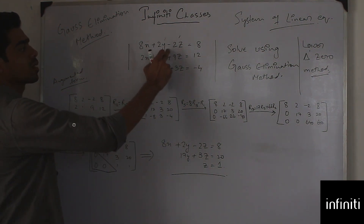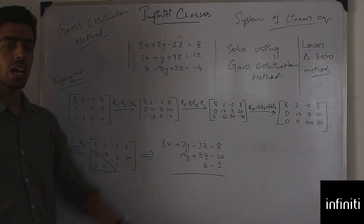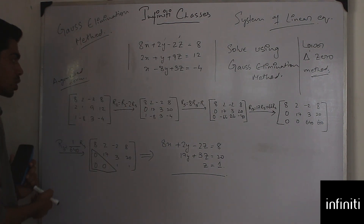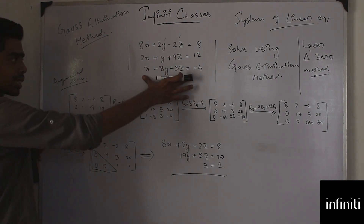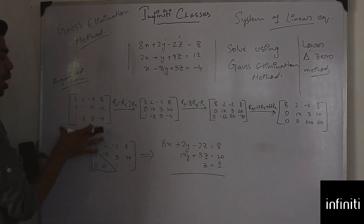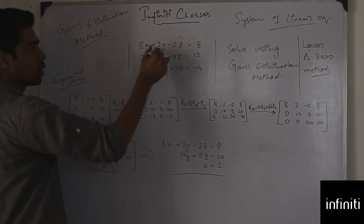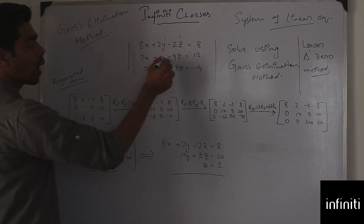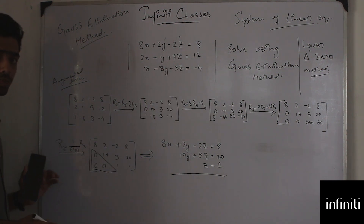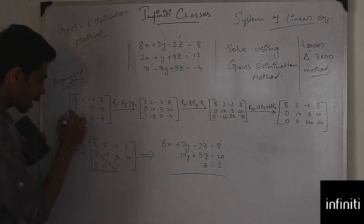I'll solve using Gauss's elimination method, also known as the lower zero triangle method. I'll convert this system of equations into a matrix in augmented form: [8, 2, -2 | 8], [2, 1, 9 | 12], [1, -8, 3 | -4].